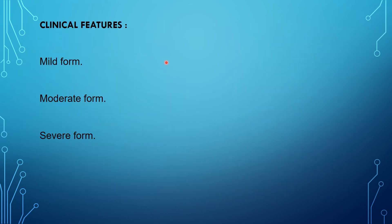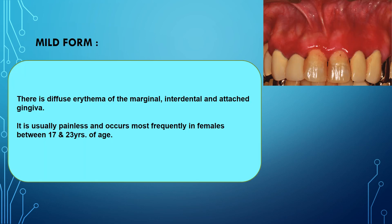The clinical features can be classified into mild, moderate, and severe forms. In the mild form, it can be seen as diffuse erythema of the marginal, interdental, and attached gingiva. It is usually painless and occurs most frequently in females between 17 and 23 years of age.